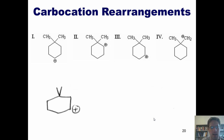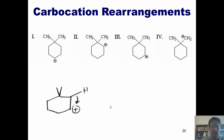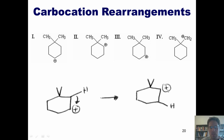Option three: we have a secondary carbocation with an adjacent hydrogen. Moving that hydrogen over to plug the hole leaves a positive charge at the new position. We've gone from a secondary carbocation to a secondary carbocation — no improvement. So this rearrangement will not occur.